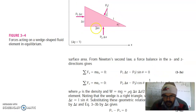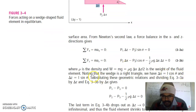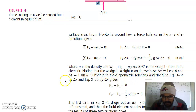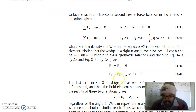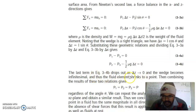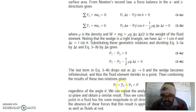Now for the inclined surface, ΔX is equal to l·cosθ and ΔZ is equal to l·sinθ. Substituting these geometric relations and dividing by ΔZ, we get P1 minus P3 equals 0, and P2 minus P3 minus one-half times density times gravity times ΔZ equals 0. The last term drops out as ΔZ tends to 0 and the wedge becomes infinitesimal, so the fluid element shrinks to a point. Combining the results gives P1 = P2 = P3 = P.